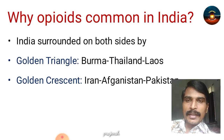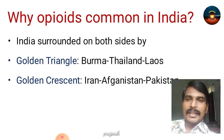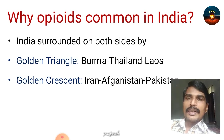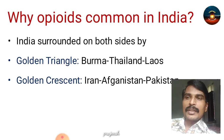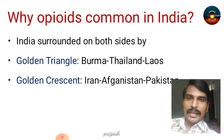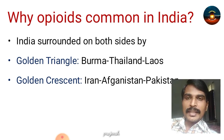Why are opioids common in India? Because India is surrounded on both sides by triplet countries. The first one is the Golden Triangle, formed by Burma, Thailand, and Laos — three countries involved in trafficking of opioids. And the Golden Crescent on the other side — Iran, Afghanistan, and Pakistan — where opium is also cultivated on a large scale. The major market for both these triplet countries is India, which is why opioids are more common here.